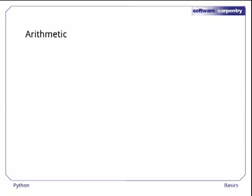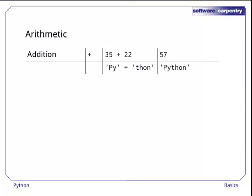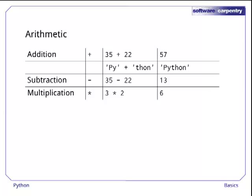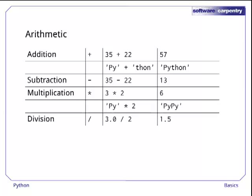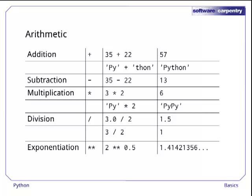Python provides the usual arithmetic operations on numbers, plus for addition, which can also be used to concatenate strings, minus for subtraction, star for multiplication, which can be used on strings as well, slash for division, which produces an integer throwing away any fractional part if both its arguments are integers, double star for exponentiation, and percentage sign for integer remainder.